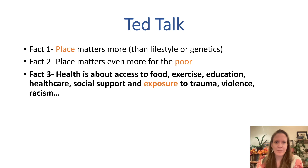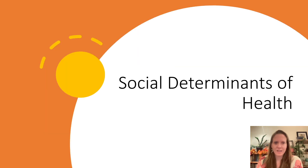Going back to the TED talk, let's look at fact number three: healthcare is about access to food, exercise, education, healthcare, social support, and exposure to trauma, violence, and racism. The TED talk doesn't explicitly say this, but those are the social determinants of health — and that's really what we're here to talk about today.